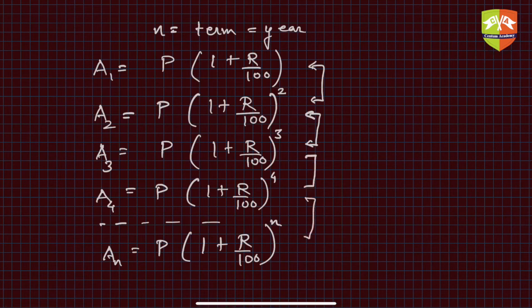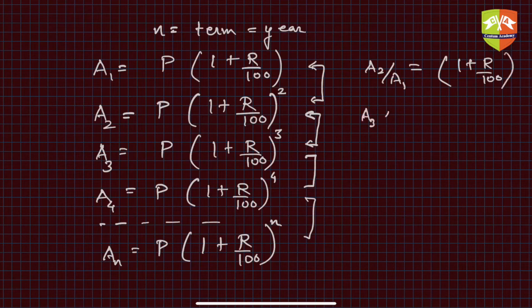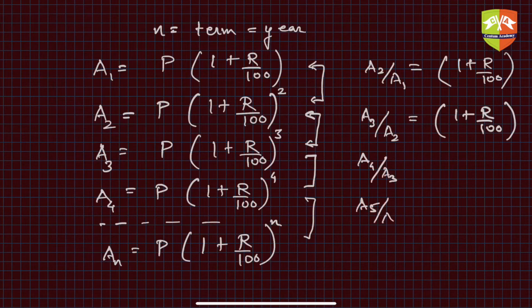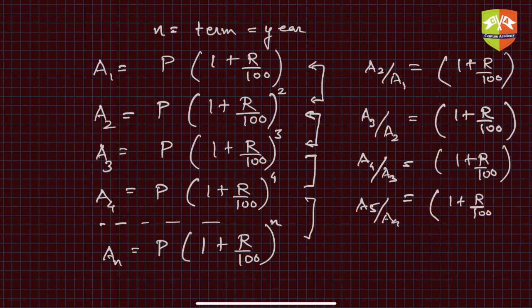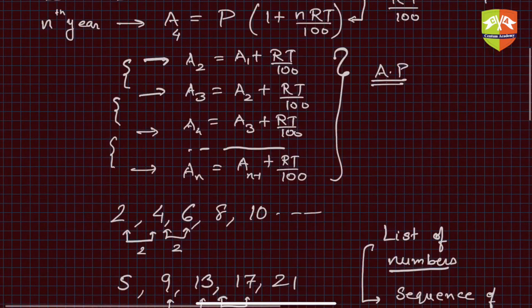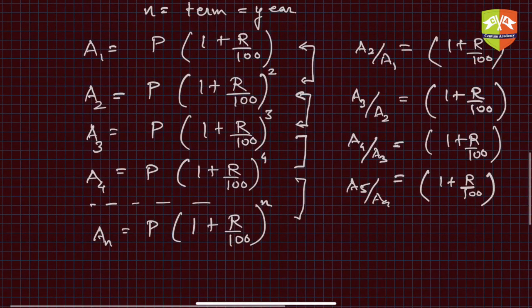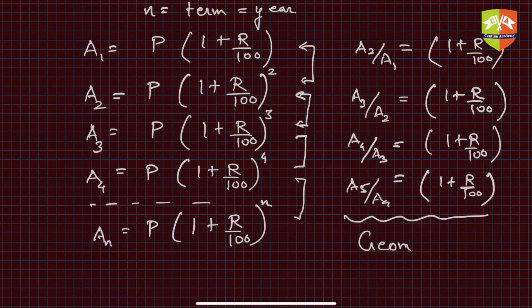Generalizing, a_n = P(1 + R/100)^n. Now let's analyze the behavior pattern here. If you take the ratio a2/a1, you get exactly (1 + R/100). Then a3/a2 gives the same ratio, and a4/a3 and a5/a4 are all the same — all equal to (1 + R/100). So here the ratio between consecutive terms is constant. In the previous case the difference was constant; here the ratio is constant.